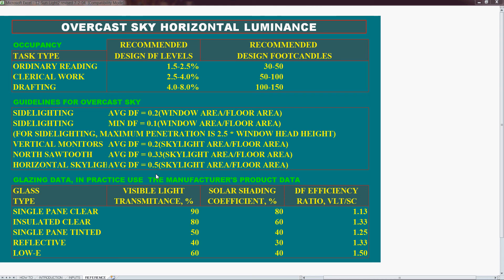If we know our visible light transmittance of our glazing and its solar shading coefficient — which is the total amount of energy that comes through as opposed to just the visible light — then the ratio of those two things, sometimes called the cool factor, is here just an efficiency ratio.